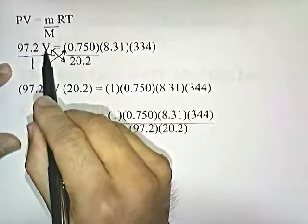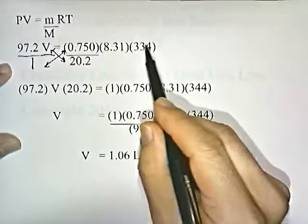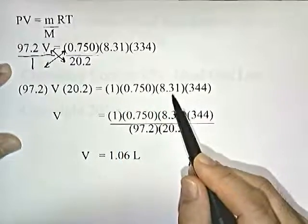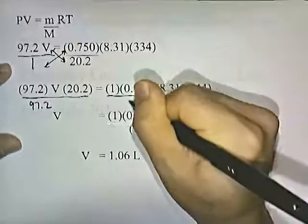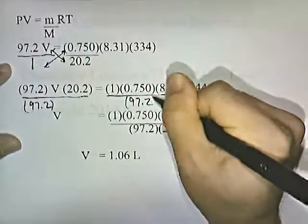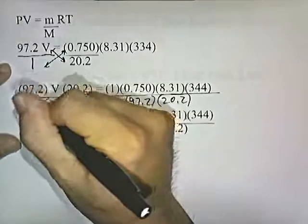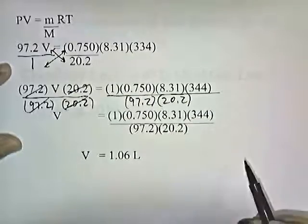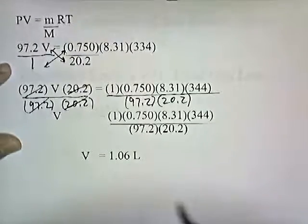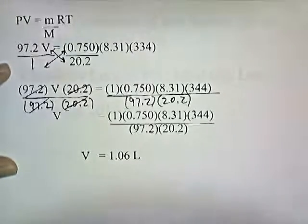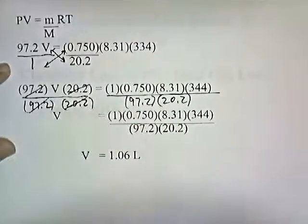97.2 times V times 20.2 equals 1 times 0.75 times 8.31 times 334. To get V by itself, divide both sides by 97.2, and then divide both sides by 20.2. 97.2 cancels there, 20.2 cancels there. You get V equals these numbers multiplied together divided by the product of these numbers. If you work out this fraction, you get V equals 1.06 liters. That's how much space the gas takes up if you have that many grams of it at that temperature and that pressure.